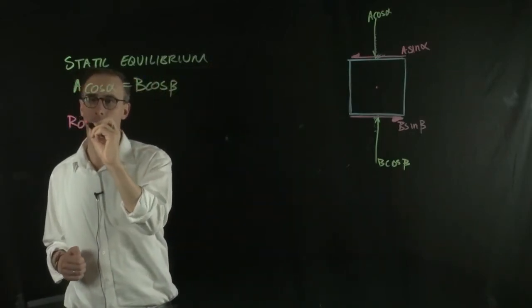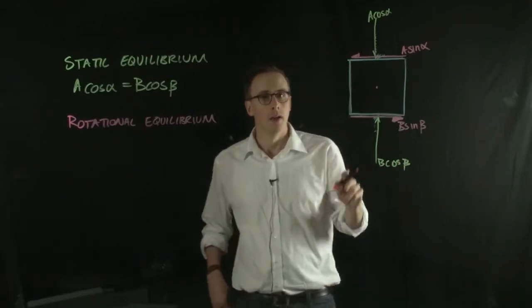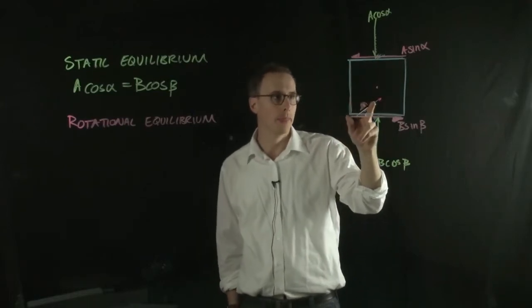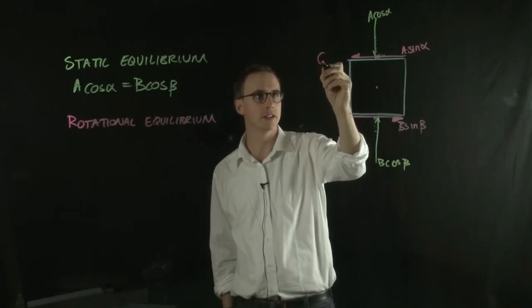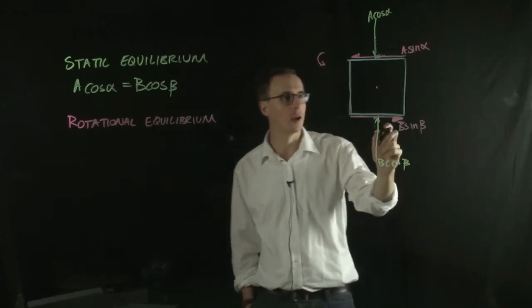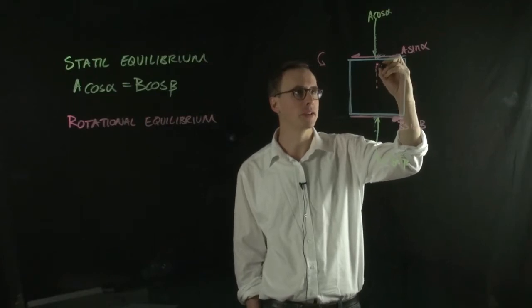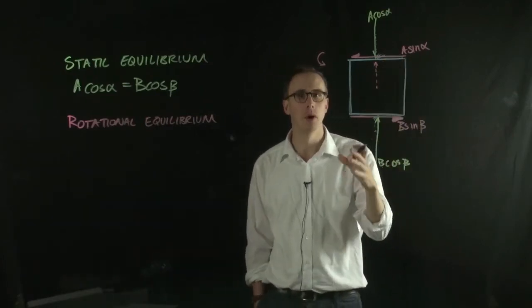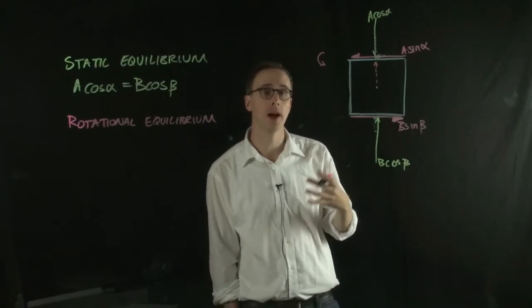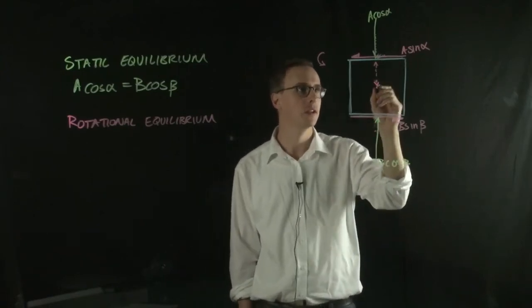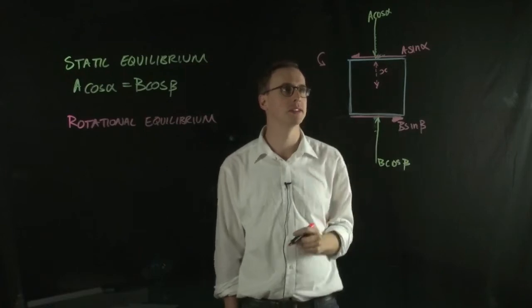So for rotational equilibrium, the moments that are acting in this direction are A sine alpha and B sine beta. So you can see that the moments caused by these two forces are acting in the same direction. So if we take the distance from the center to be X,